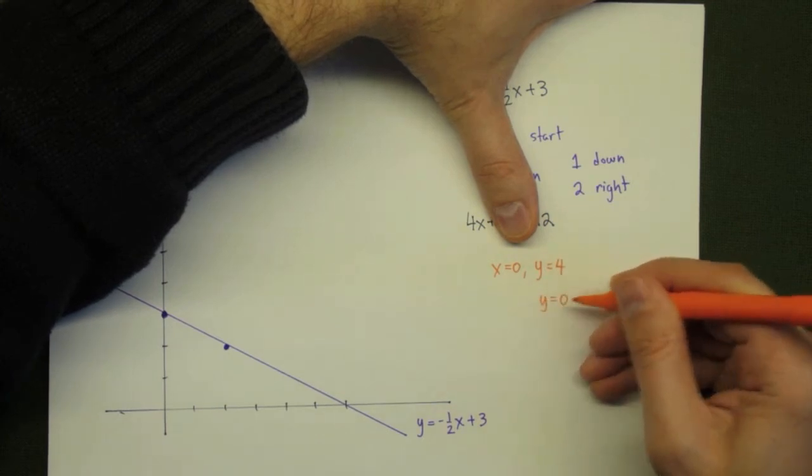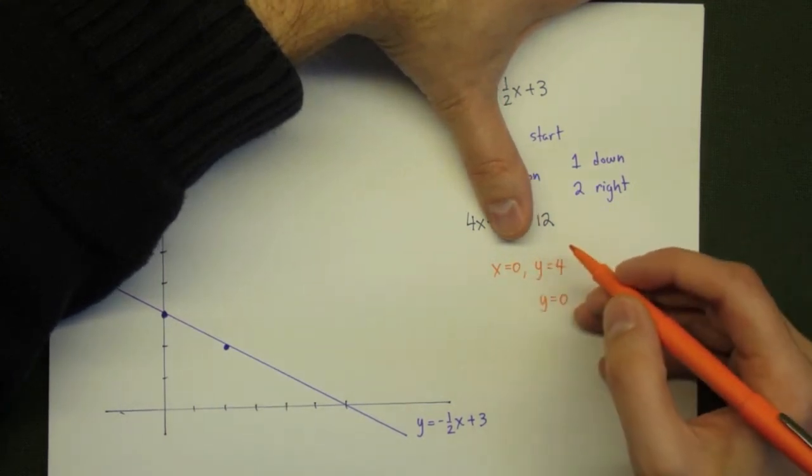For the other intercept, when y is equal to 0, we solve the remaining, and we see that x has to equal 3.